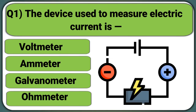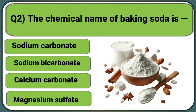The device used to measure electric current is: Voltmeter, Ammeter, Galvanometer, or Ohmmeter. Answer: Ammeter.